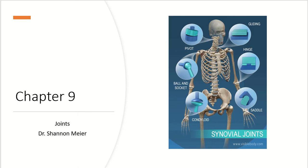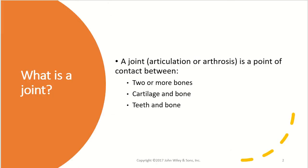This is Chapter 9, talking about the joints of the body. A joint is also called an articulation or an arthrosis, and this is going to be a point of contact between a couple of different things. It can be contact between two bones, between cartilage and bones, and also between teeth and bones. All of which are considered to be a joint.